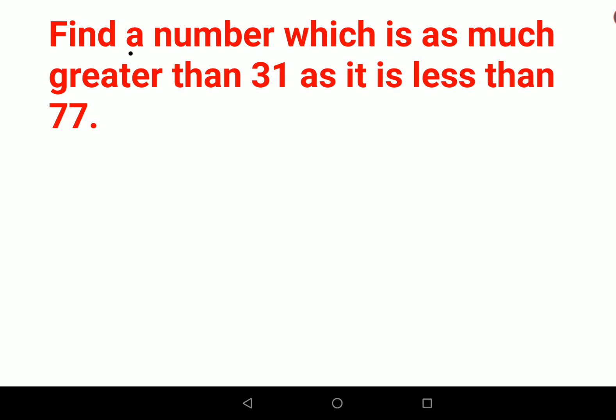The question is: find a number which is as much greater than 31 as it is less than 77. So let the number be x, and we are saying that it is 31 plus some amount, so let that amount be d. And here they are also saying x is also 77 minus d.